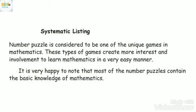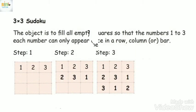It is very good to note that most number puzzles contain basic knowledge of mathematics. There are a number of pieces. The object is to fill all empty squares so that the numbers 1, 2, 3 — each number can only appear once in a row, column, or box. We have a 3x3 grid with 3x3 columns.